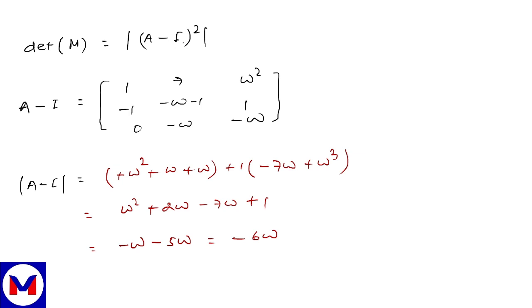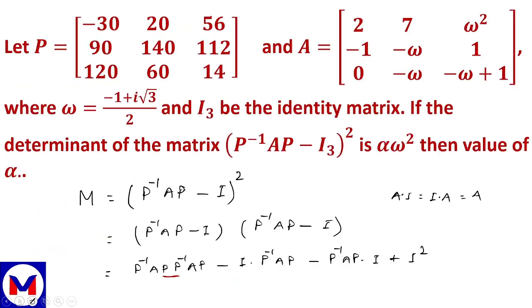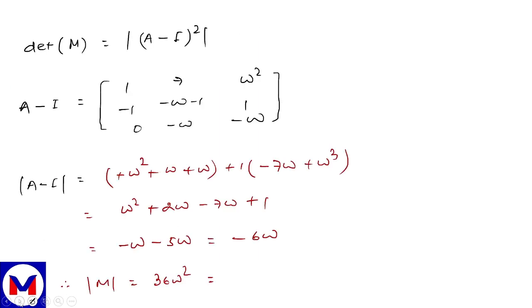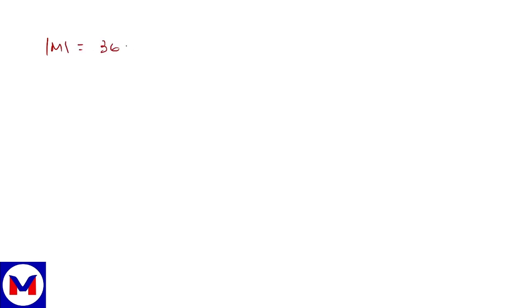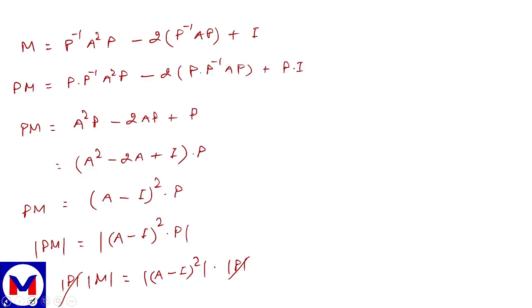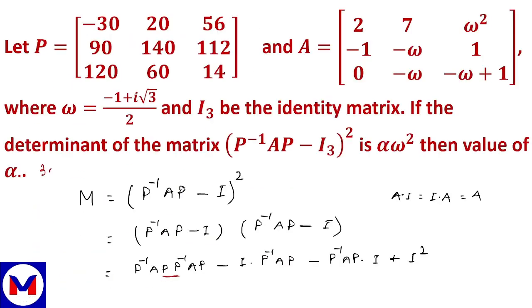And det(A - I) whole squared is our det(M). Therefore det(M) is nothing but 36·omega squared. And this is what the question asked — alpha·omega squared. Comparing: det(M) equals 36·omega squared equals alpha·omega squared, so the value of alpha is 36. This is the required answer.